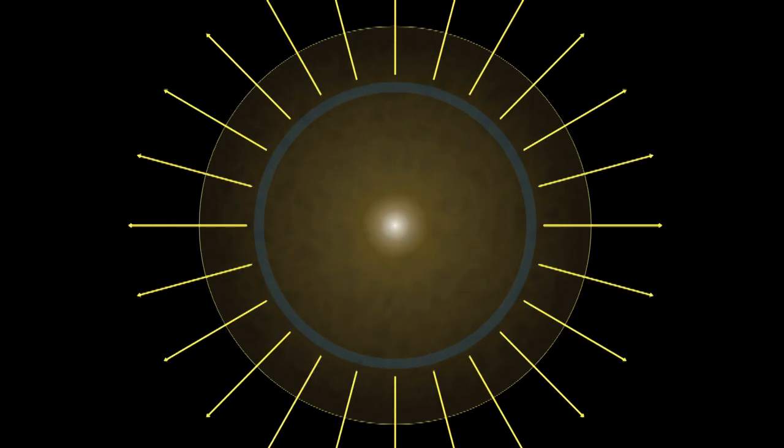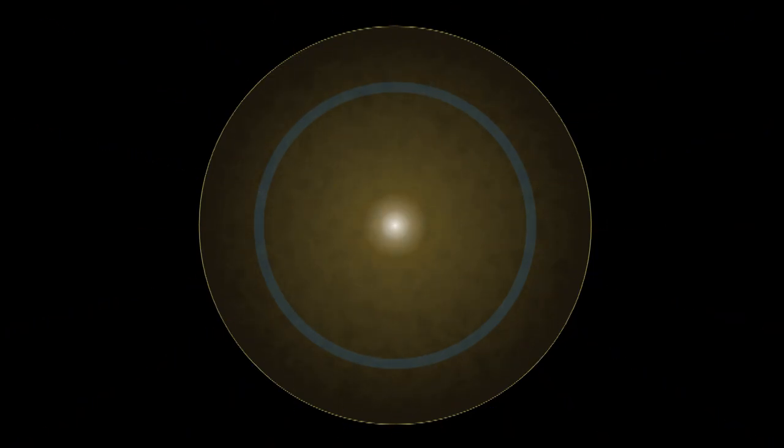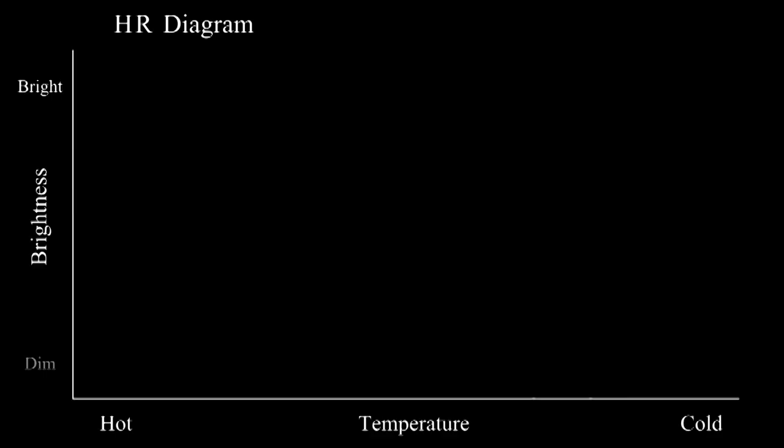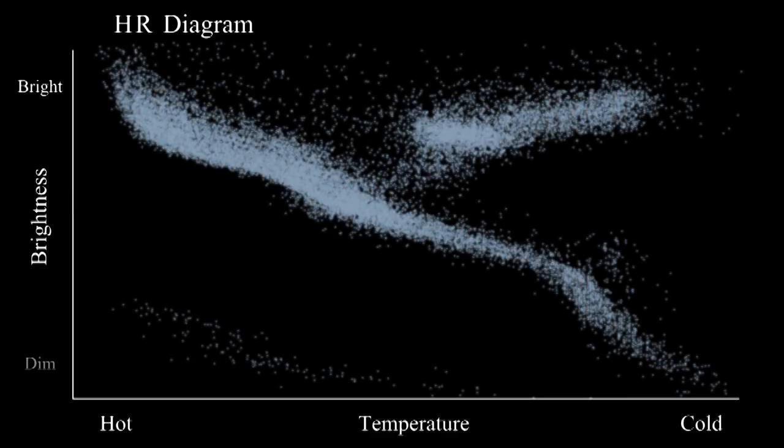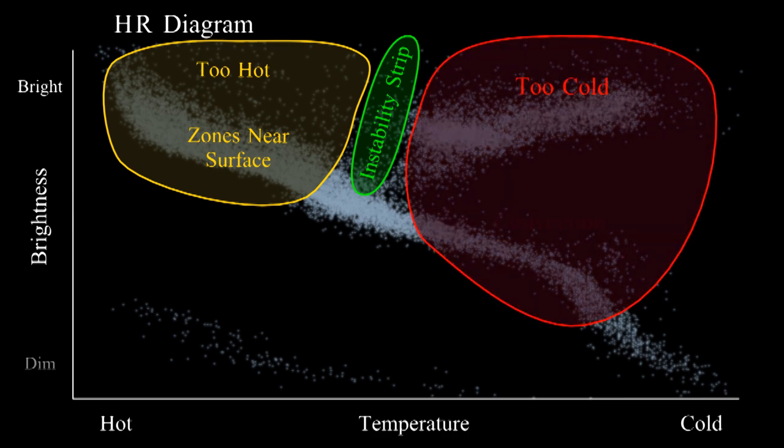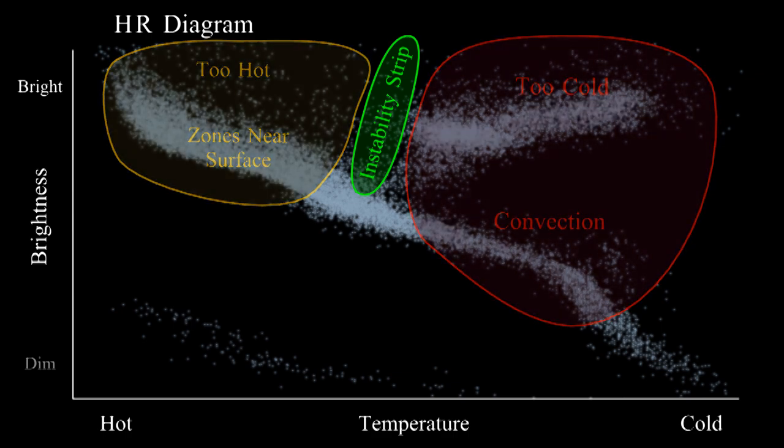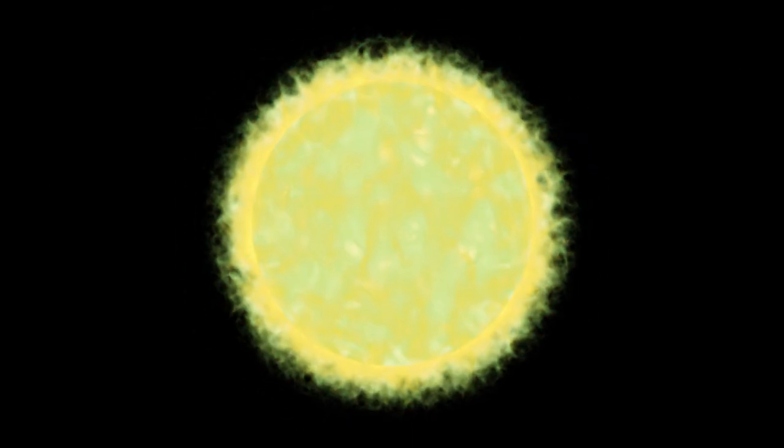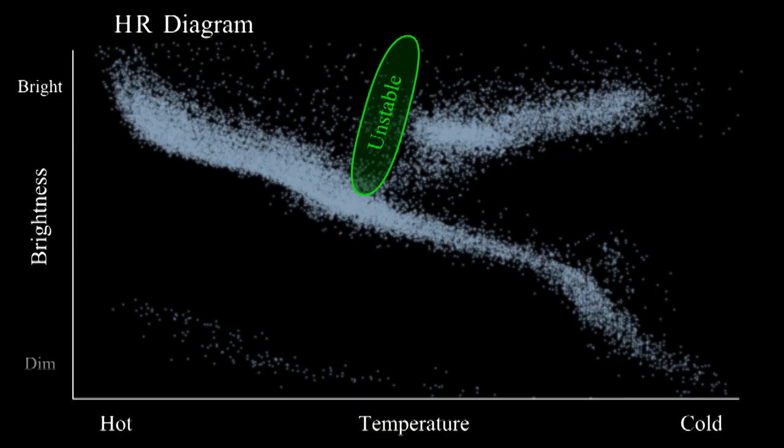All the opacity stuff we've been talking about doesn't matter for cooler stars. If we plot the temperature and brightness of stars, we see that there's this narrow band where stars are unstable. It's called the instability strip. Above this temperature, the ionization zones are too close to the surface to have an impact. Below this temperature, convection takes over. So inside this strip, we have these unstable stars that rapidly expand and contract.